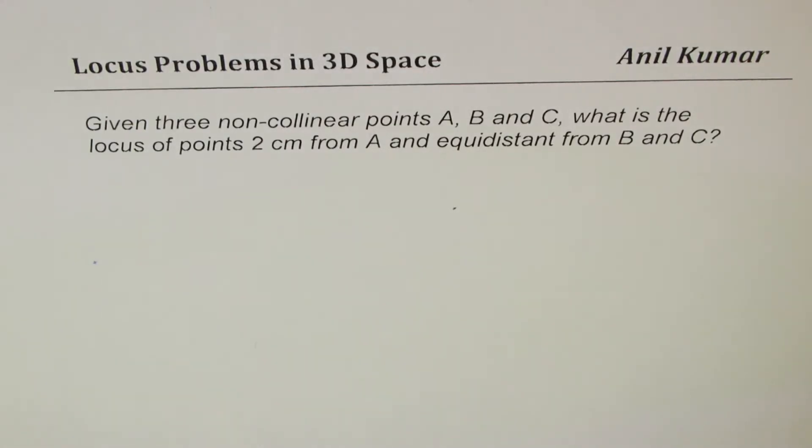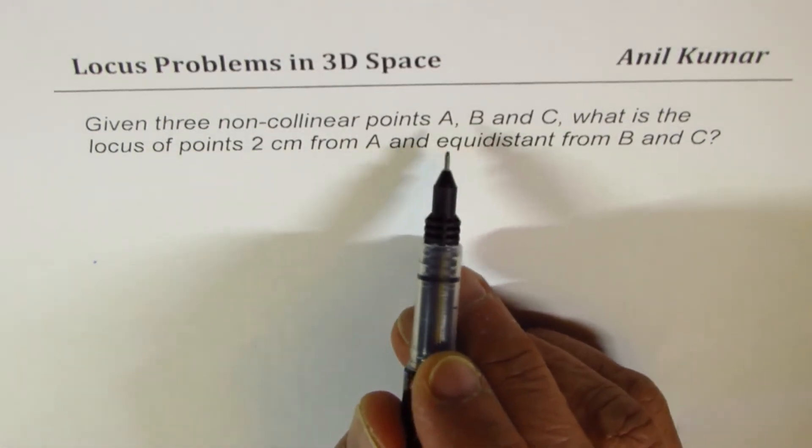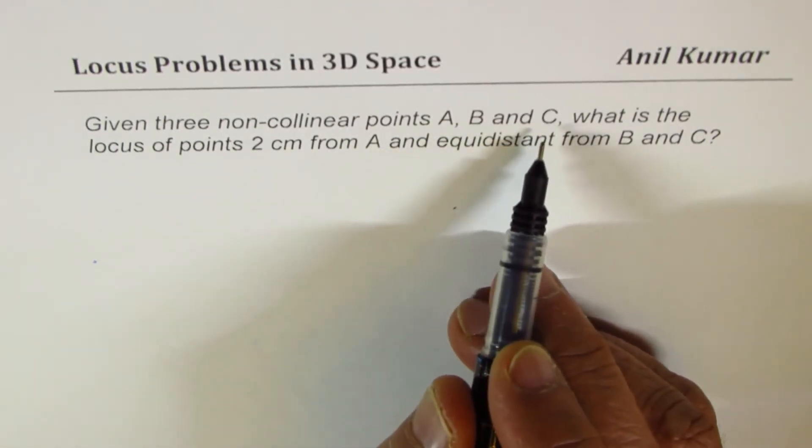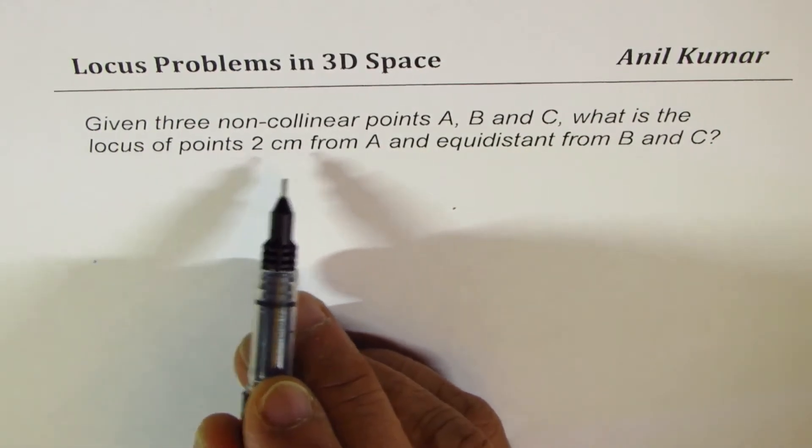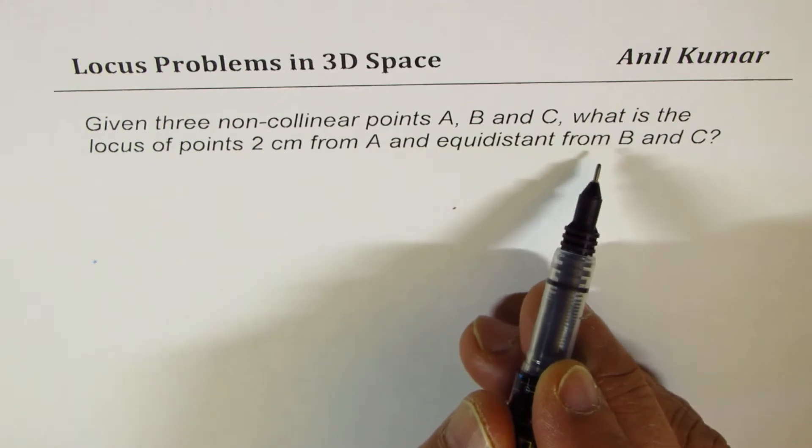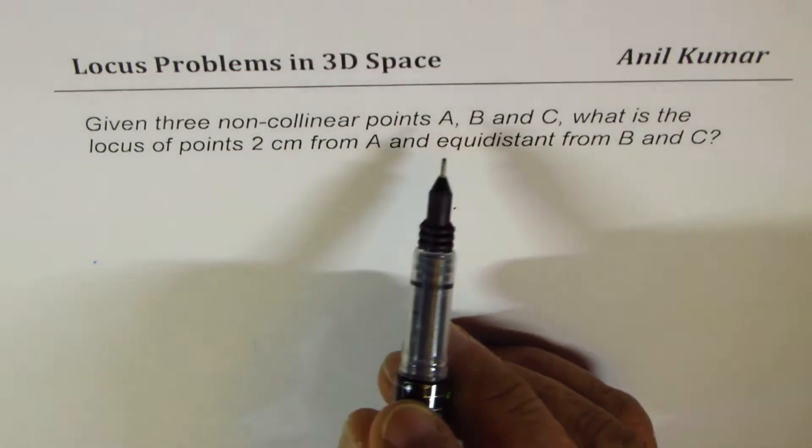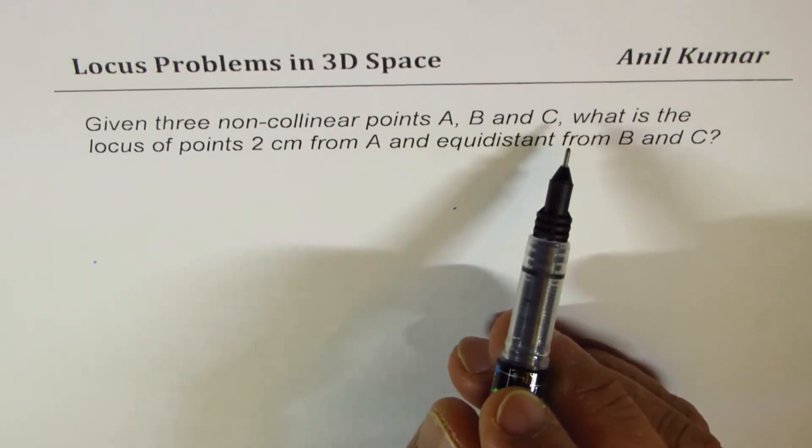we are given 3 non-collinear points A, B, and C. What is the locus of points 2 cm from A and equidistant from B and C? So, here, we are given 3 non-collinear points.